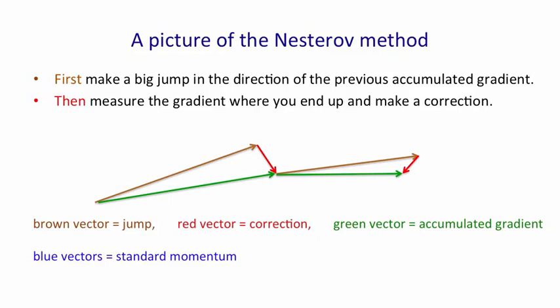Now, if you compare that with the standard momentum method, the standard momentum method starts with an accumulated gradient that's like that initial brown vector, but then it measures the gradient where it is. So it measures the gradient at its current location, and it adds that to the brown vector so that it makes a jump like this big blue vector. That's just the brown vector plus the current gradient. It turns out if you're going to gamble, it's much better to gamble and then make a correction than to make a correction and then gamble.